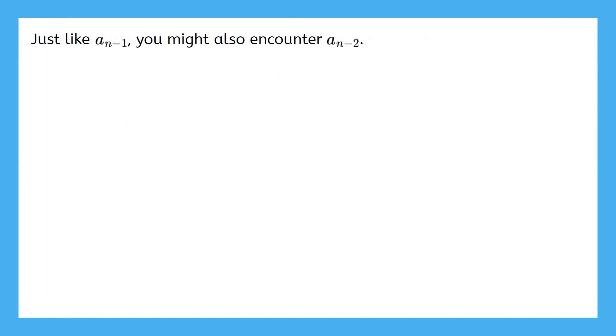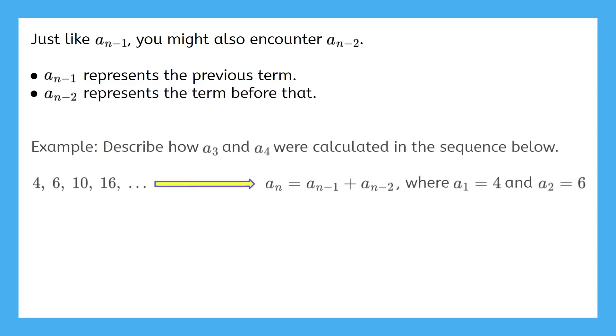Here's another notation that can pop up. Just like a sub n minus 1, you might also encounter a sub n minus 2. a sub n minus 1 represents the previous term. a sub n minus 2 represents the term before that. Example: Describe how a3 and a4 were calculated in the sequence below. 4, 6, 10, 16. a_n equals a sub n minus 1 plus a sub n minus 2, where a1 equals 4 and a2 equals 6. 10 plus 6 equals 16. Our third term is 10, and it must have come from the formula. 6 is the previous term, and 4 is the term before that. Oh, 6 plus 4 is 10. All this formula is saying is add the previous two terms to get the current one.